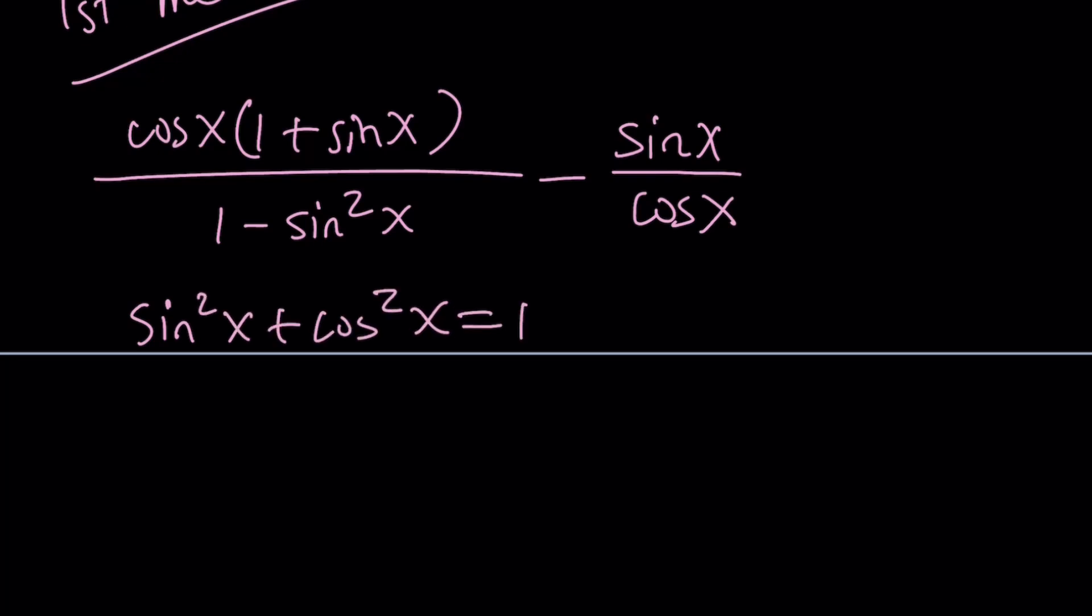So this is probably the most important identity. And 1 minus sine squared just happens to be cosine squared. So cosine squared can be written as 1 minus sine squared. So we're going to replace this with cosine squared.